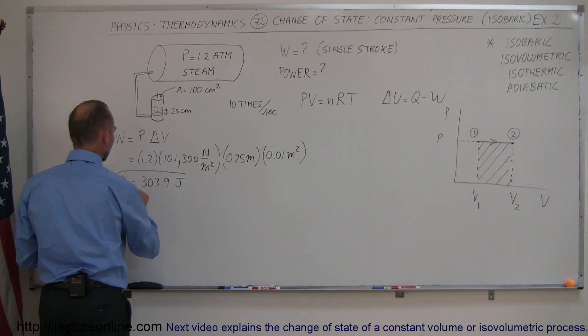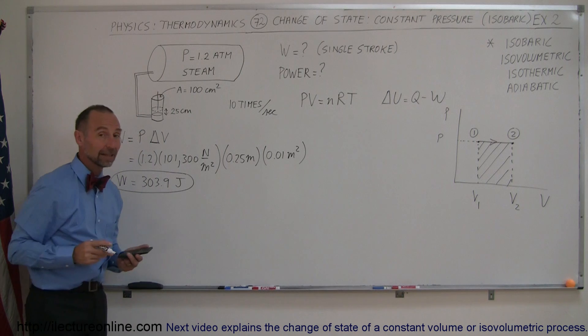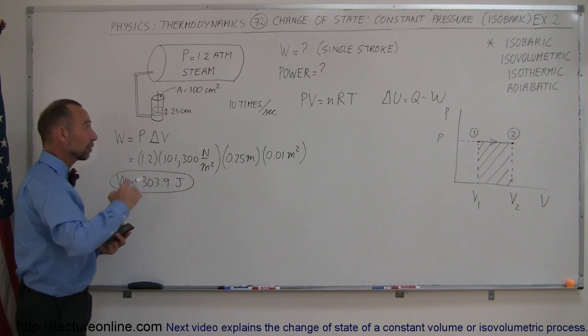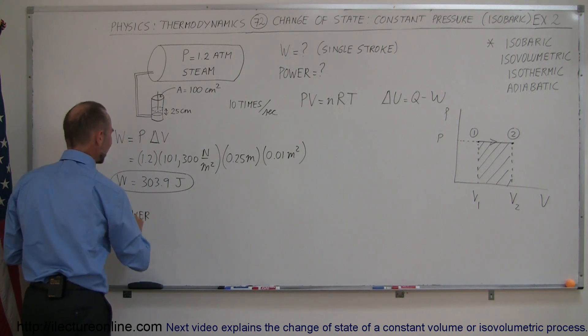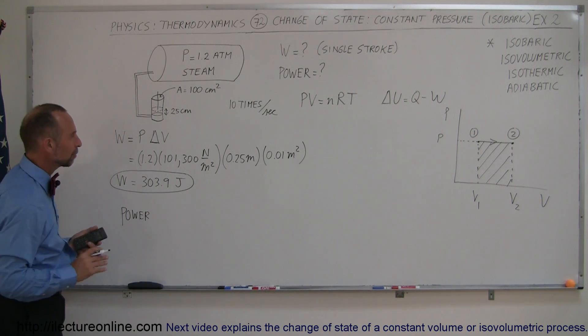And, of course, that's the work done by a single stroke of this piston. Now, if this piston is going up and down 10 times per second, then, of course, the power. And I'll write power, because if I write P, you might confuse that with pressure.